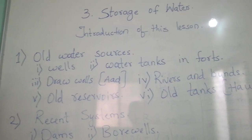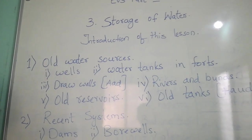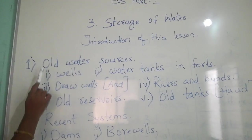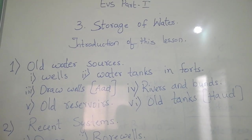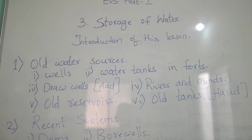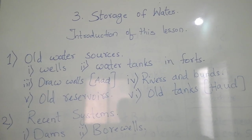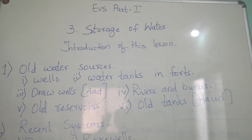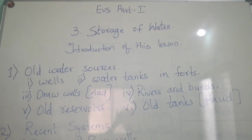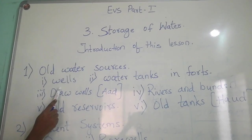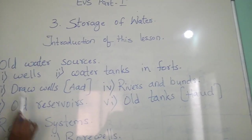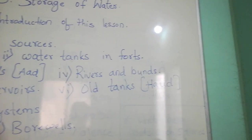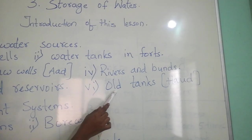I am going to teach only the introduction of this lesson. First point: old water sources. Old water sources means in the olden days, in the previous days, how water was stored. The sources are: first, wells; second, water tanks in forts; third, draw wells; fourth, rivers and buns; fifth, old reservoirs; and sixth, old tanks.